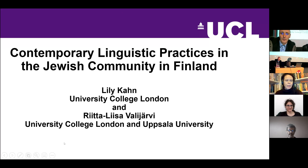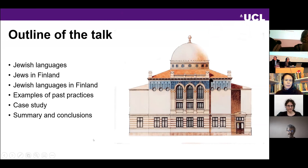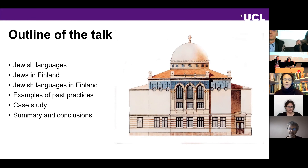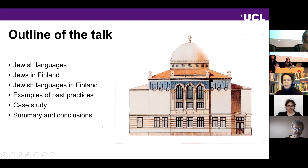Greetings from London. This is the outline of our talk: Lily will talk about Jewish languages and I'll give an overview of the history of Jews in Finland and discuss the Jewish languages used by that community. We've done a previous study which Lily will summarize, with examples of past practices, followed by our case study and conclusions. The image here is the Helsinki synagogue from 1906 — an Art Nouveau synagogue — and we'll see a picture from the inside as well.